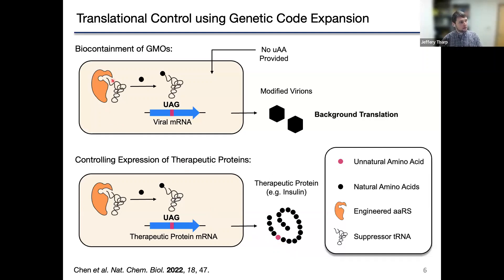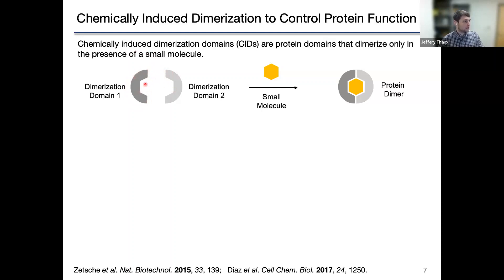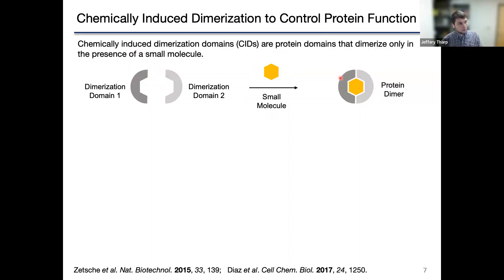This leads me to the motivation for the project I want to discuss today: we wanted to find a way to more tightly control gene expression using genetic code expansion. We focused on the aminoacyl tRNA synthetase specifically, and we wanted to find a way to regulate its activity — to turn it on when we wanted to induce stop codon suppression and turn it off when we did not.